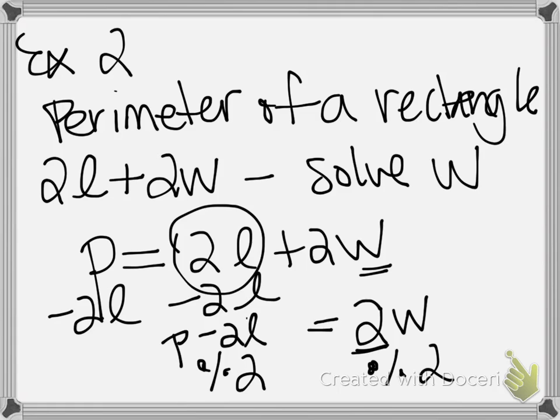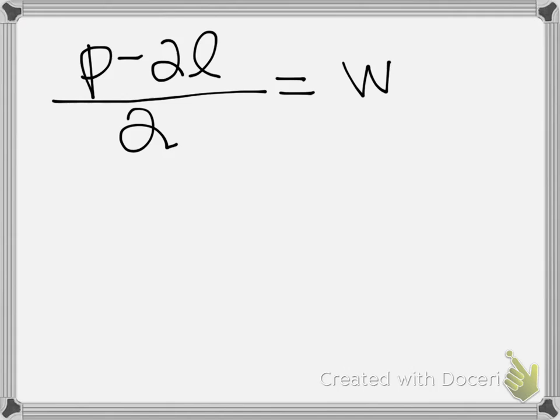If I divide both of those by 2, now I have P minus 2L, and the whole thing has to be divided by 2 equals my W.